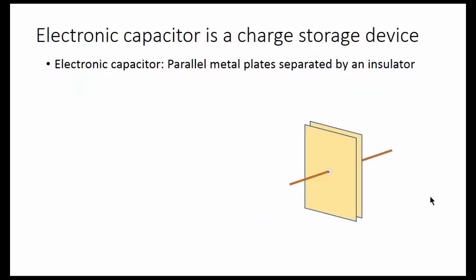An electronic capacitor is a set of parallel metal plates separated by an insulator. The amount of charge stored is proportional to the voltage applied. 0 volts, 0 coulombs.